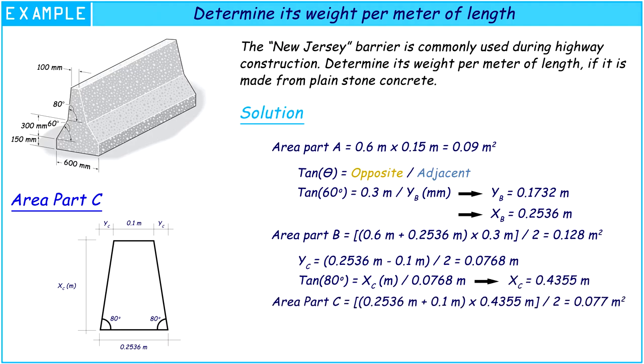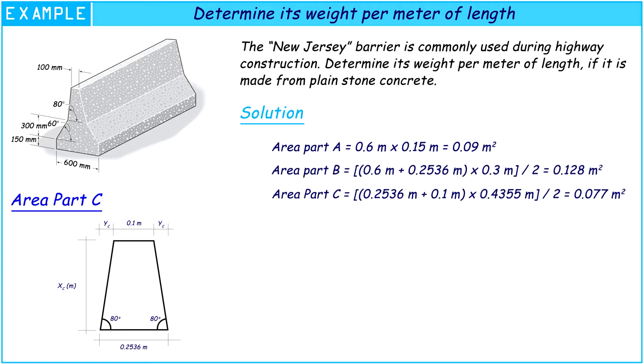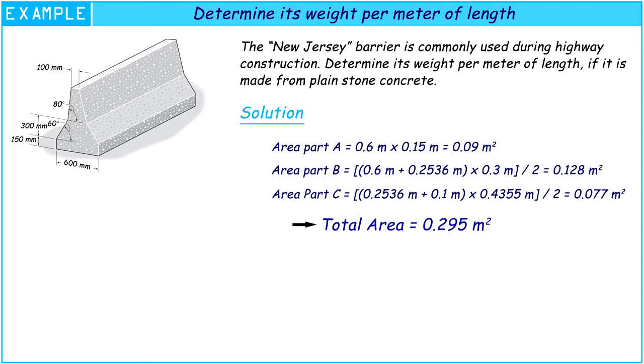So, the area of Part C is 0.077 square meters. Now we can find the total area of the New Jersey barrier. It is equal to 0.295 square meters.